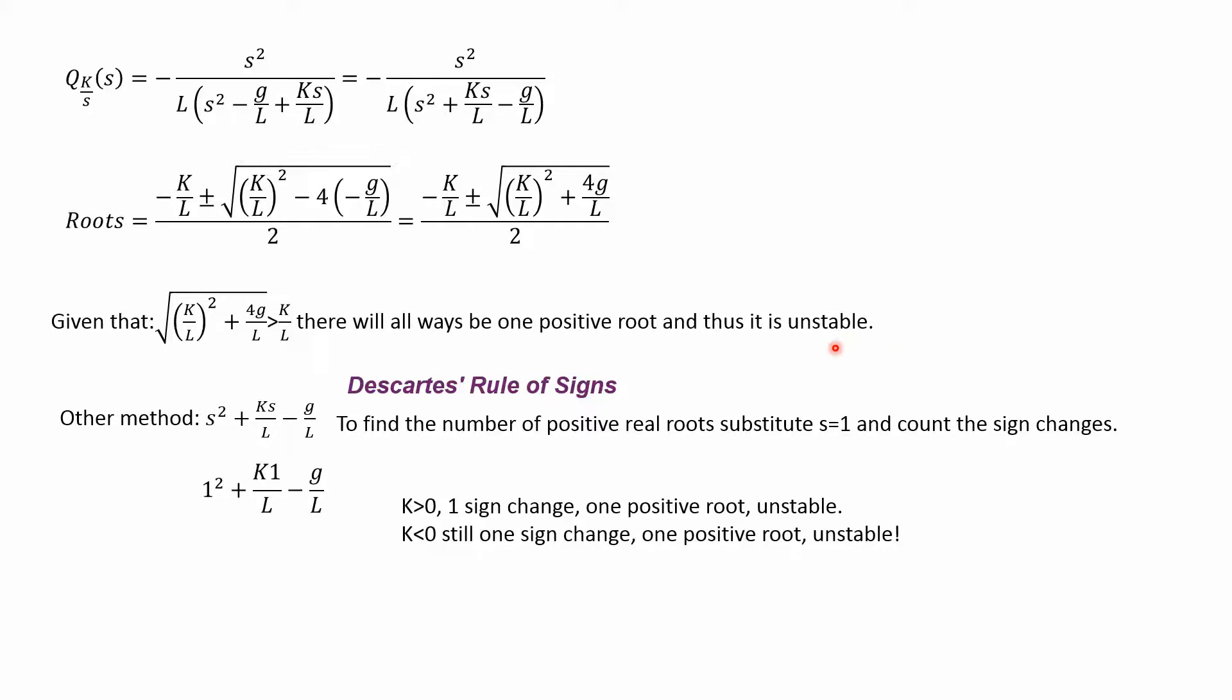We can also look at this another way using Descartes' Rule of Signs. All you do is take the characteristic polynomial, substitute s = 1, and count the sign changes. So 1² is 1, K/L times 1, and -g/L is unchanged. It's positive, positive, negative—one sign change. If K > 0, there's one sign change, one positive root, unstable.